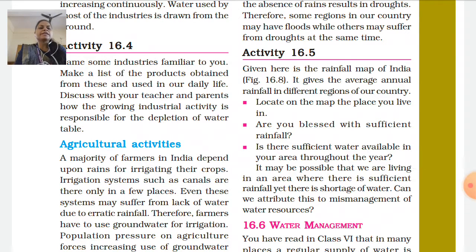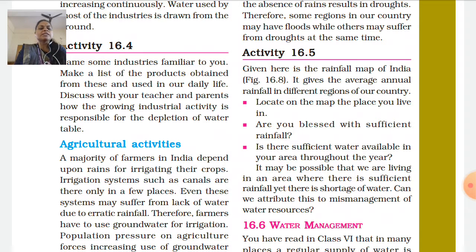Now let's look at Activity 16.5. Here is the rainfall map of India, figure 16.8, which shows how unevenly rainfall is distributed across India.